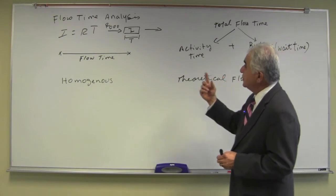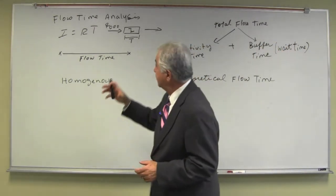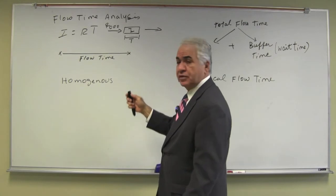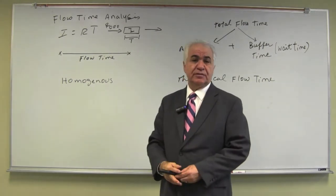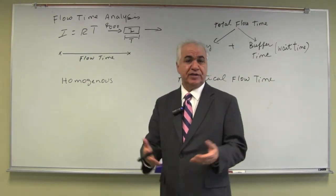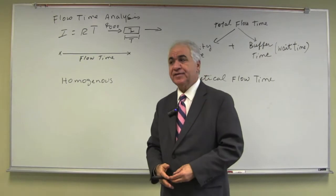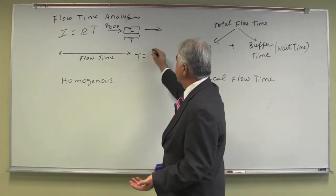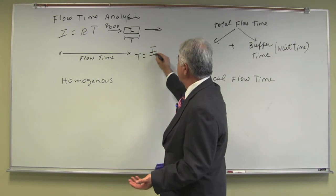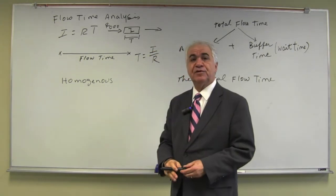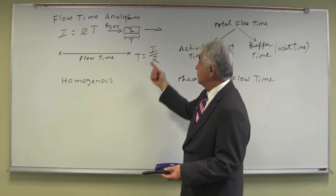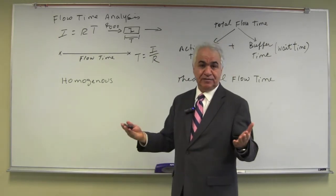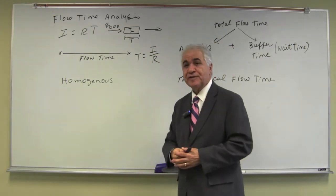This is the part of the process we're considering, and we know a variety of ways you can measure the flow time. You can observe, you can simulate, or you can use this relationship to determine the flow time of the process. Obviously, you have to have average inventory and the flow rate of the process to determine the flow time.